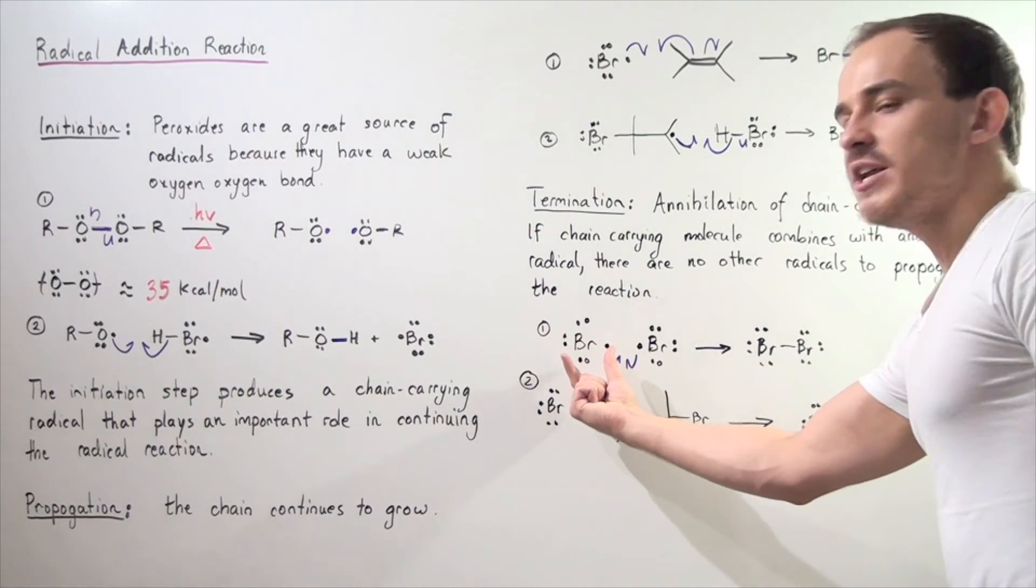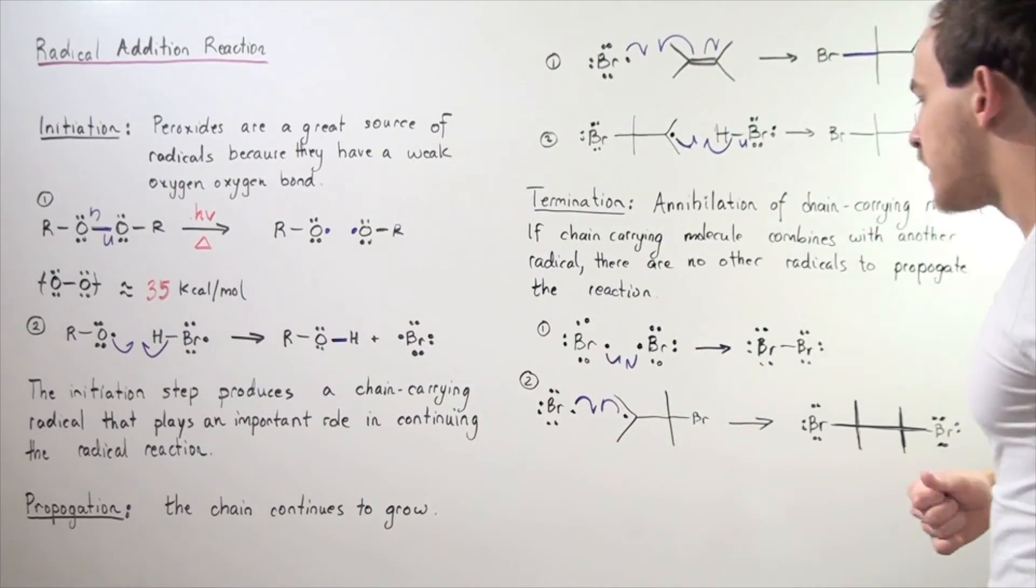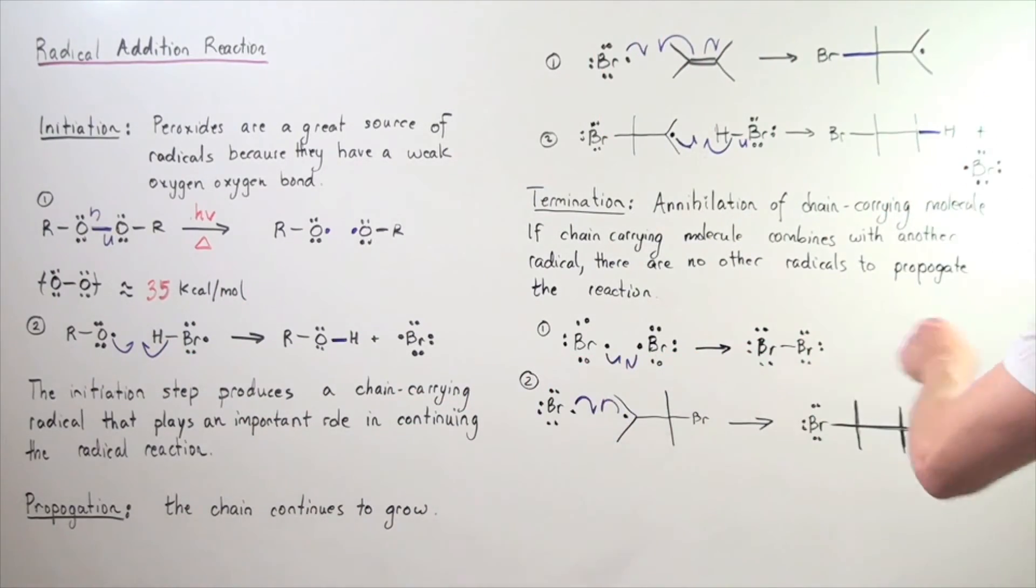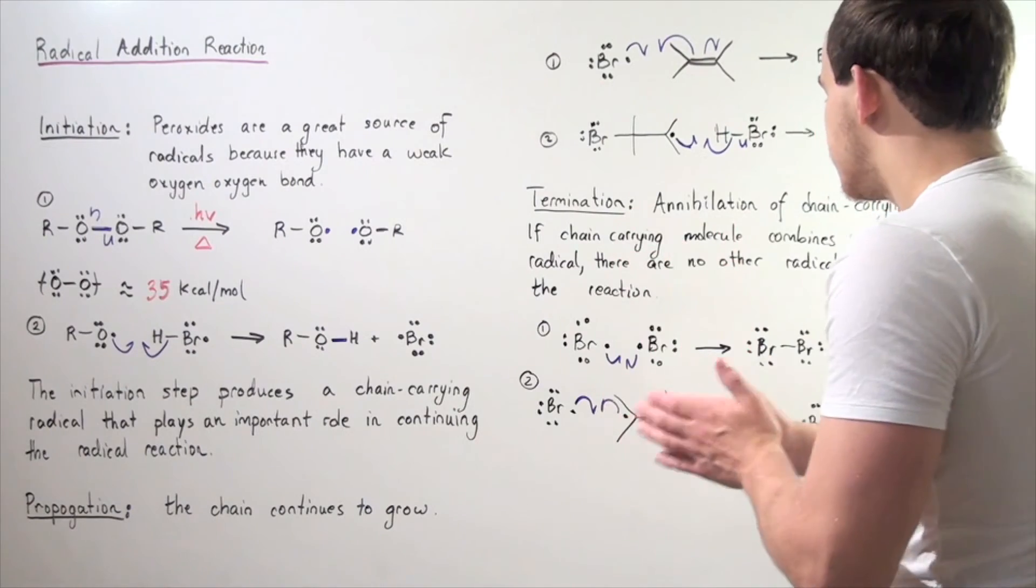If this bromine radical reacts with a second bromine radical in the following exothermic reaction, we get diatomic bromine. Now we no longer have any radicals, so our radical reaction is complete.